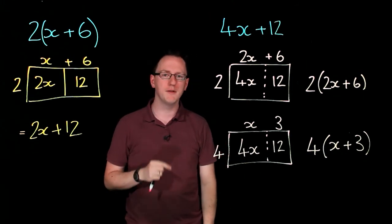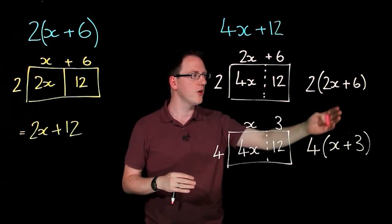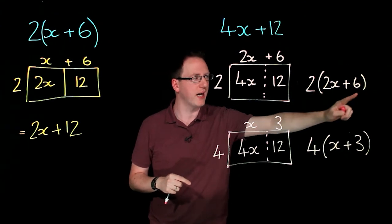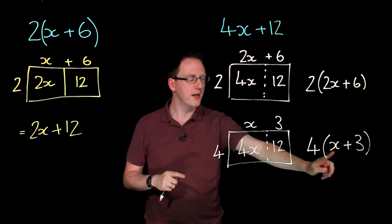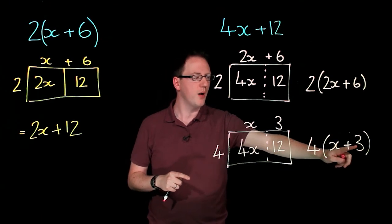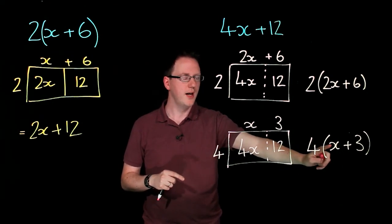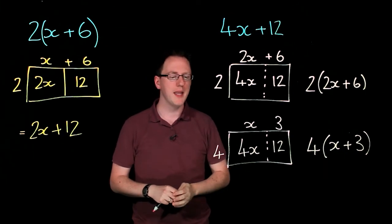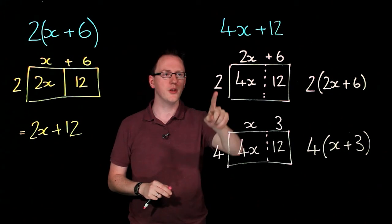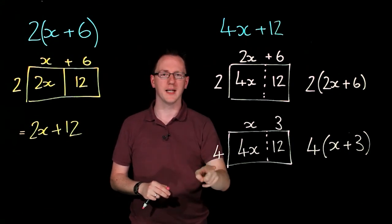But only one of them is fully factorised. Only one of them has taken out all of the factors. Because if we look at this bracket there's still a common factor of 2 in here. Whereas down here there's no common factor left in the bracket. So when we're asked to factorise we want to make sure we've fully factorised. And that means we're looking for the highest common factor. Not just a common factor but the highest one.